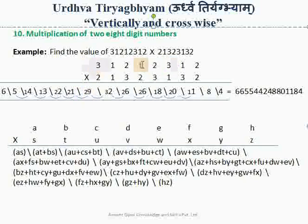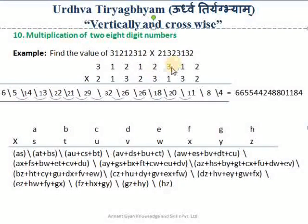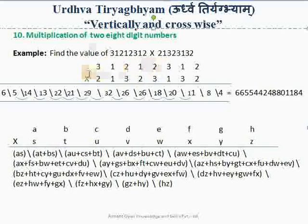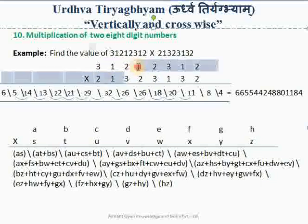In the next step, considering from 3 to 3: 3 into 1 = 3, plus 2 into 3 = 6, giving 9, plus 1 into 3 = 12, plus 1 into 2 = 14, plus 2 into 2 = 4, giving 18, plus 3 into 1 = 21. So we write 21. Next, considering five columns from 3 to 2: 3 into 3 = 9, plus 2 into 2 = 4, giving 13, plus 1 into 2 = 15, plus 1 into 1 = 16, plus 2 into 3 = 6, giving 22. So we write 22.